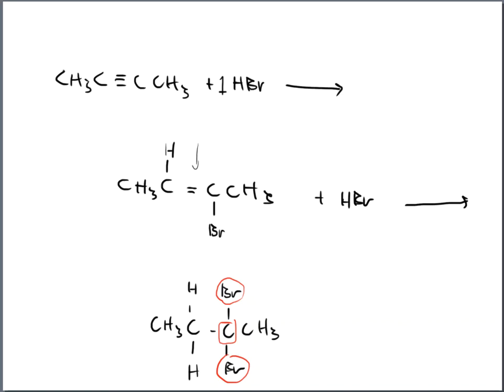When the halogens are on the same carbon, think of them as twins — identical twins, like Gemini. That's how you remember: these are called geminal dihalides, from Gemini. 'Di' means two, so two bromines in this case, and they are geminal — attached to the same carbon in the structure.